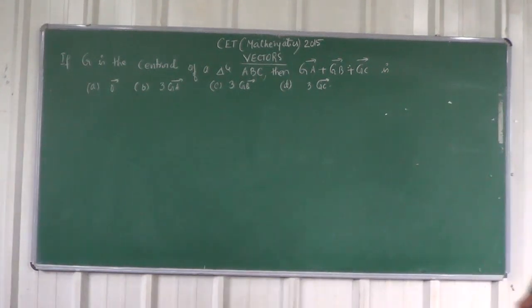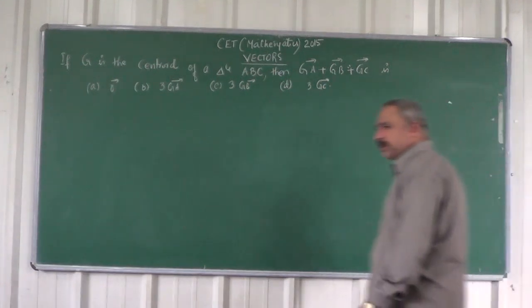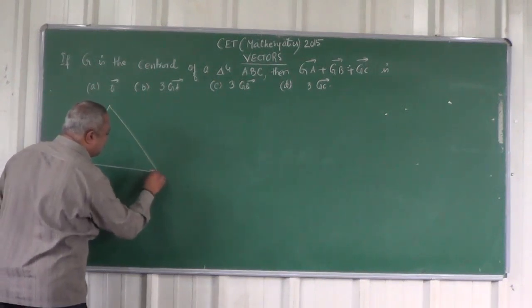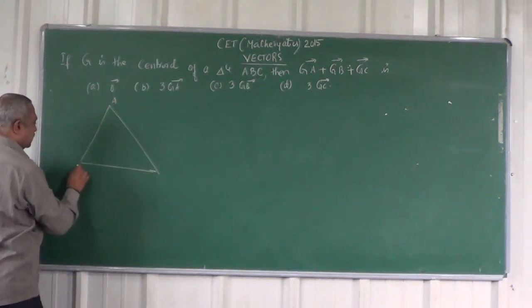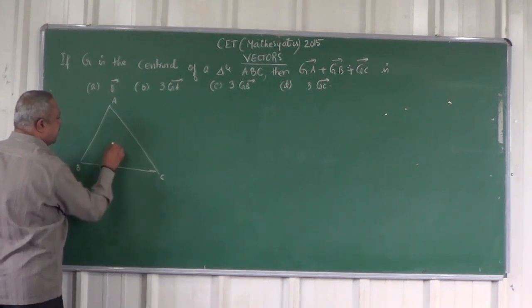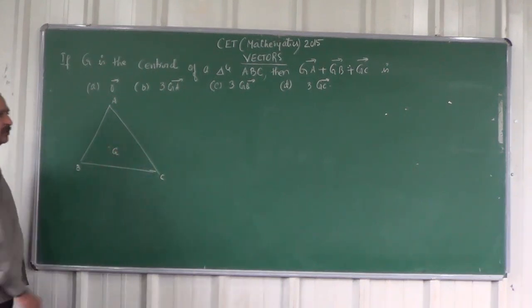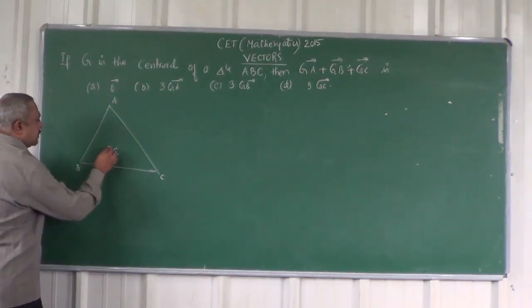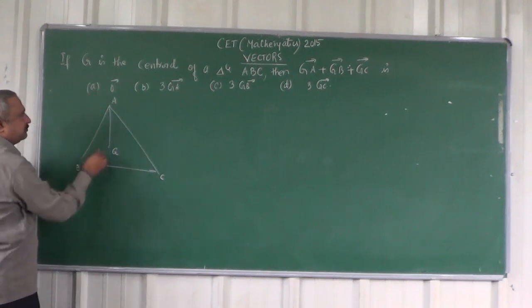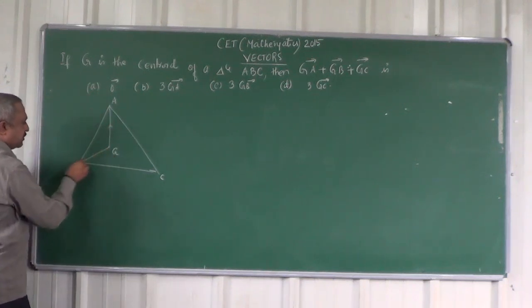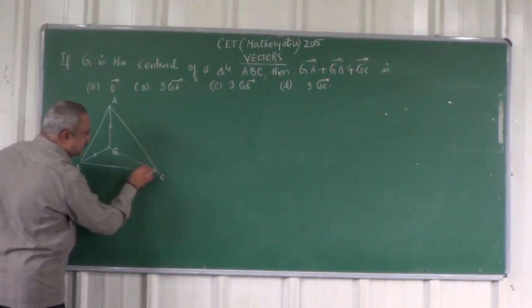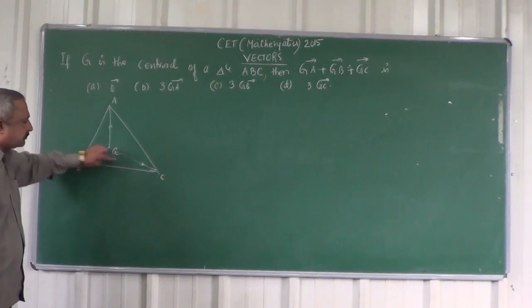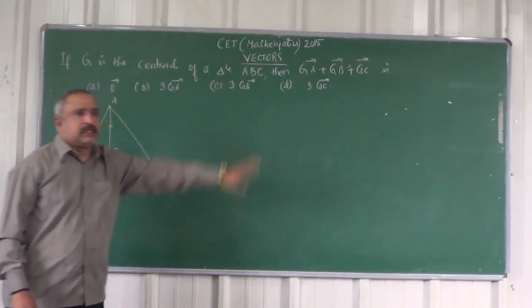G is the centroid of the triangle. Let's have a triangle ABC, and G is the centroid. We have vectors GA, GB, and GC. Which one of these four options is the answer?